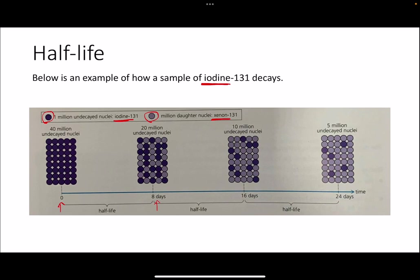After eight more days — so 16 days total — there are 10 million iodine nuclei left undecayed, while the rest have turned into xenon. In the first eight days the value decreased from 40 to 20 — it halved. In the next eight days the value halved again from 20 to 10. After another eight days, at 24 days, we go from 10 million down to only 5 million undecayed iodine nuclei — the number has halved again.